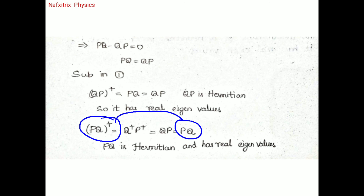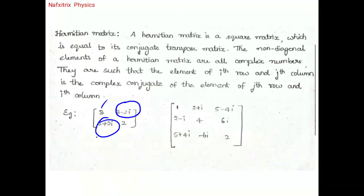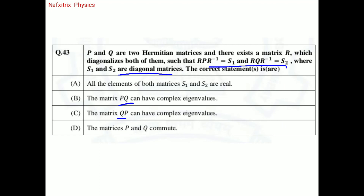To summarize: all elements of S1 and S2 are real because they are diagonal matrices of Hermitian matrices containing real eigenvalues. Matrix PQ cannot have complex eigenvalues since it is Hermitian. Matrix QP cannot have complex eigenvalues since it is also Hermitian. And P and Q commute because the commutator [P, Q] = 0. The correct options for this problem are A and D.